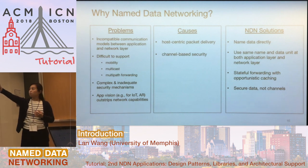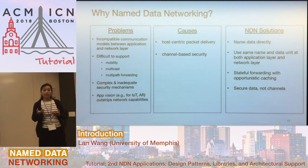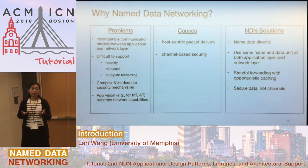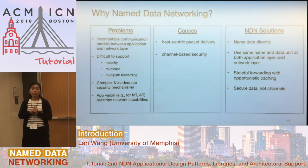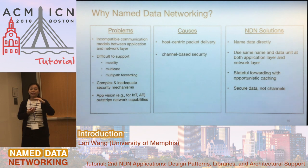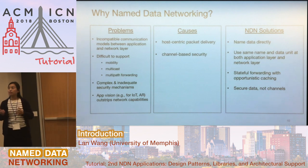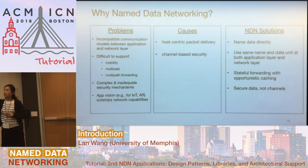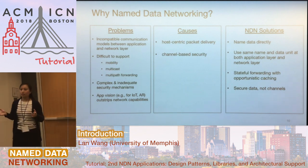In order to solve those problems, NDN has introduced new ideas: naming the data instead of the hosts, so we don't have to connect to a host. We use the same data and same name at both the application layer and the network layer, giving us the same abstraction at both layers. At the network layer we do stateful forwarding and opportunistic caching. Finally, we can directly secure data rather than channels.